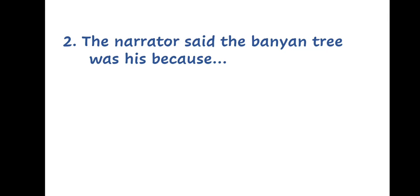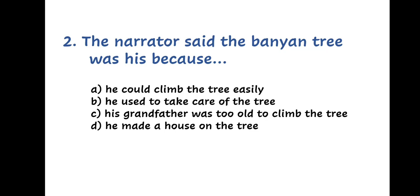Question 2. The narrator said the Banyan Tree was his because: A. He could climb the tree easily, B. He used to take care of the tree, C. His grandfather was too old to climb the tree, or D. He made a house on the tree.